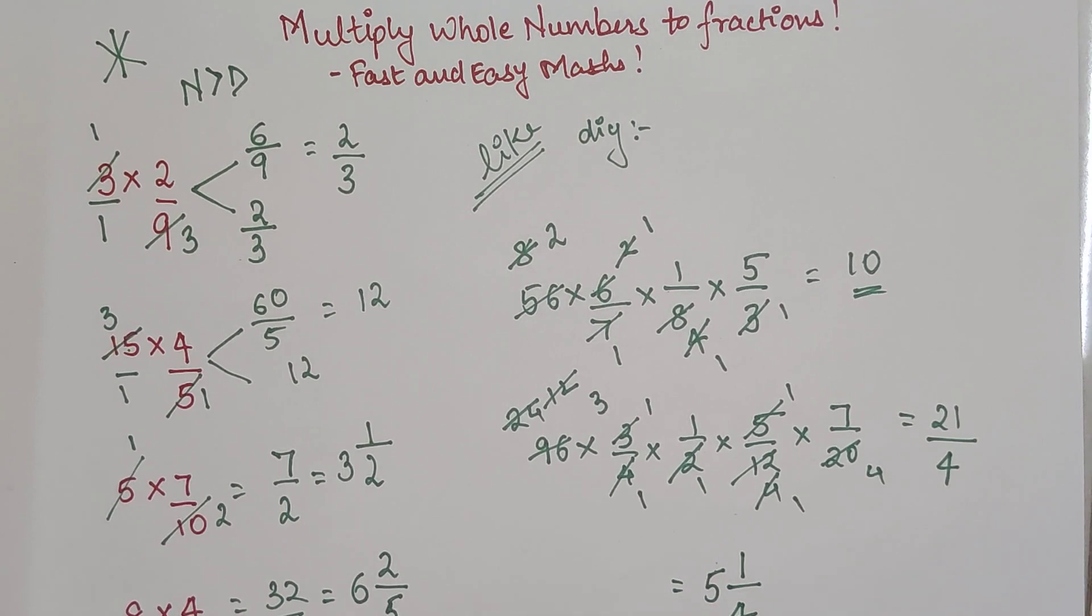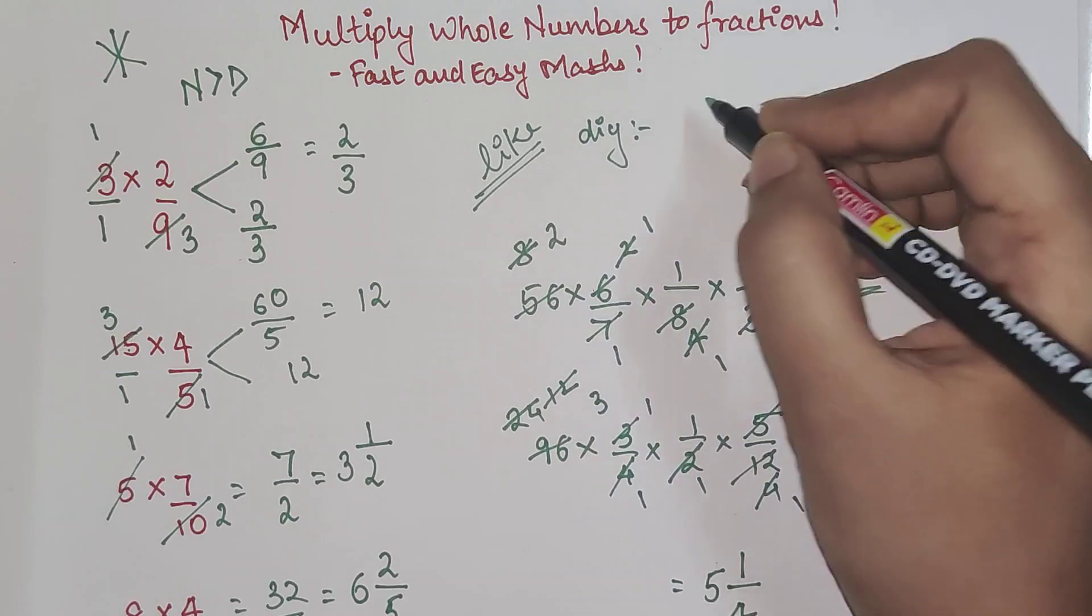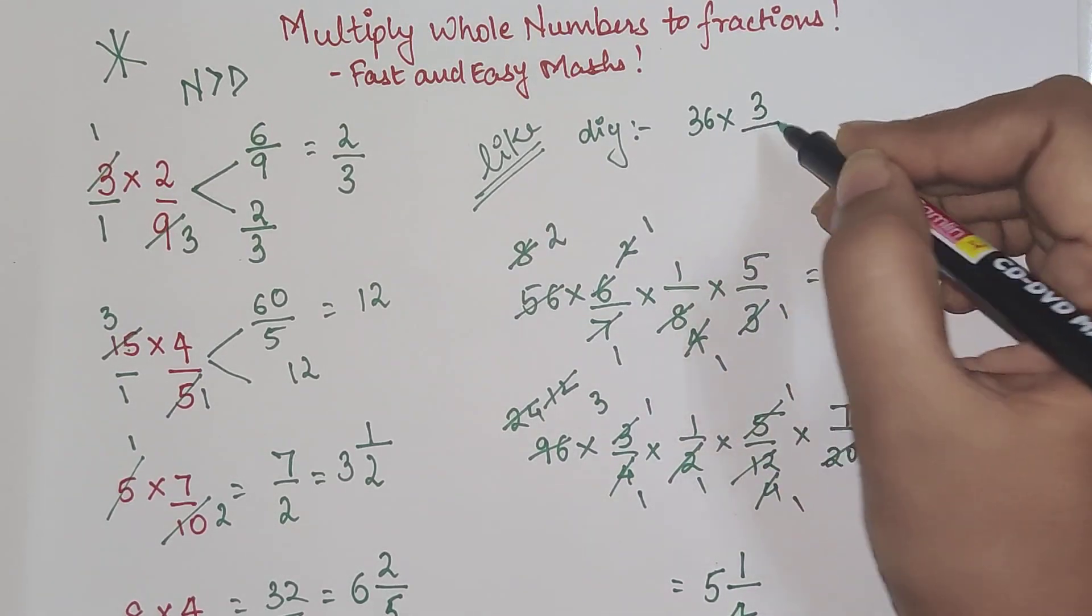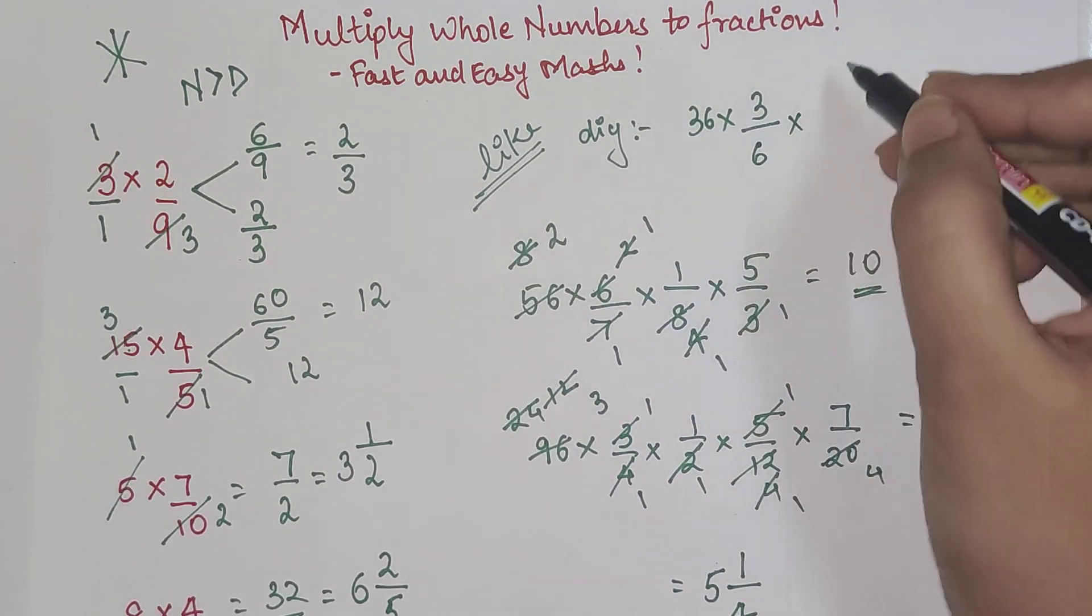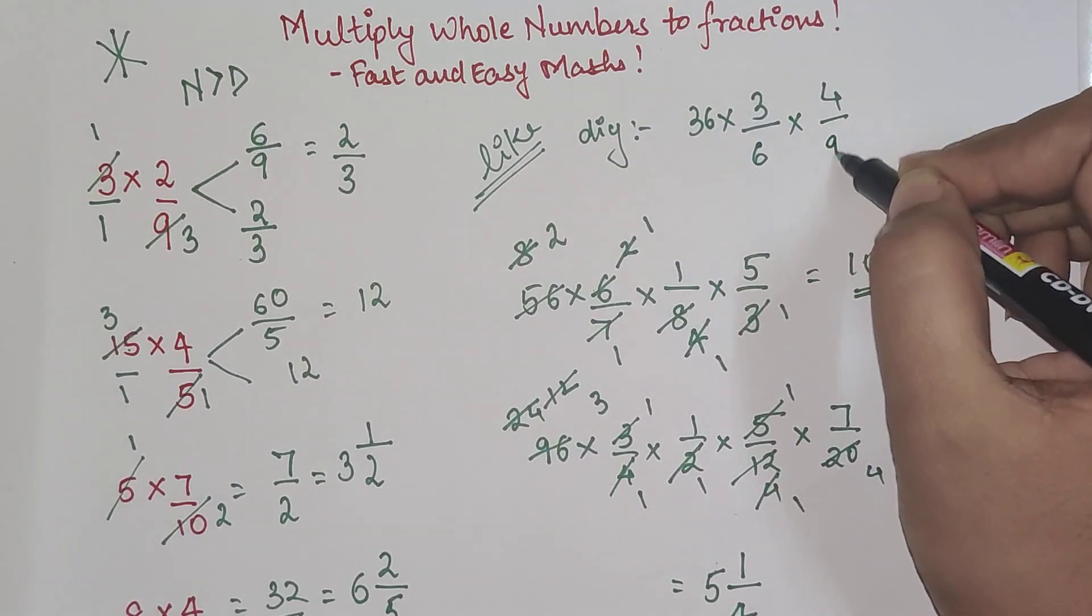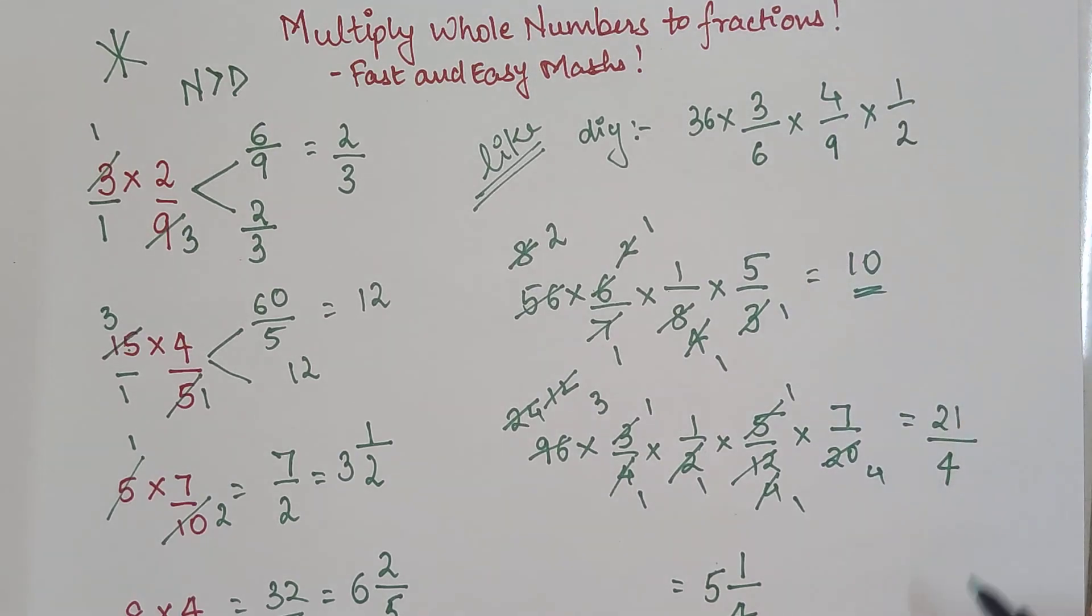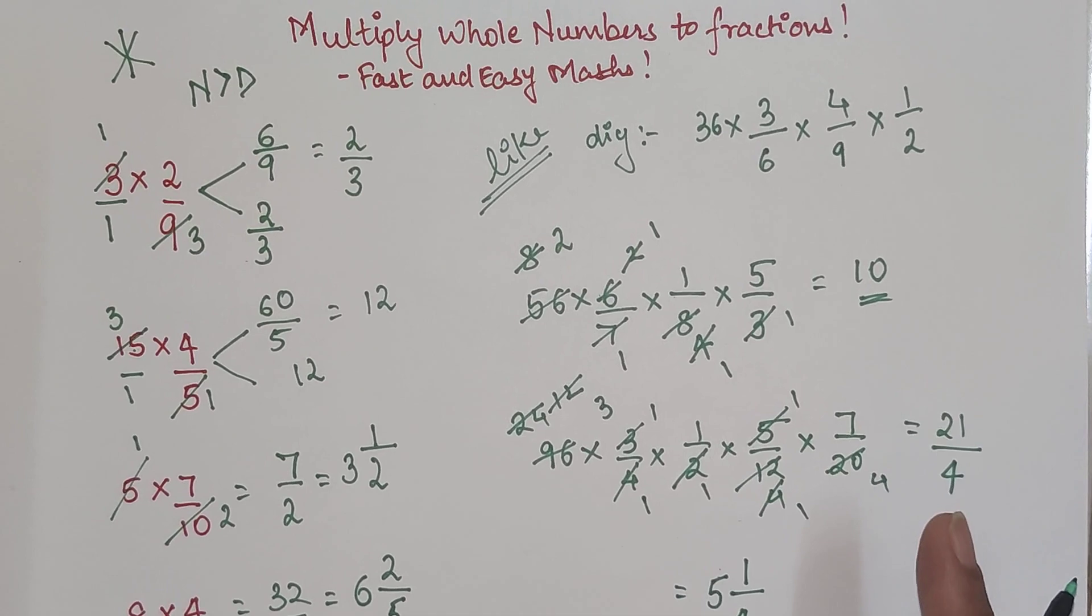So I hope you are absolutely clear about how to do these kind of questions. Now coming to your DIY, I want you to tell me what is 36 into 3 upon 6 into 4 upon 9 into 1 upon 2. Do let me know your answers in the comment section. So that's it for today. I will see you in the next video. Also don't forget every day, every single day I am putting up a video. So do subscribe to my channel for many such tricks.